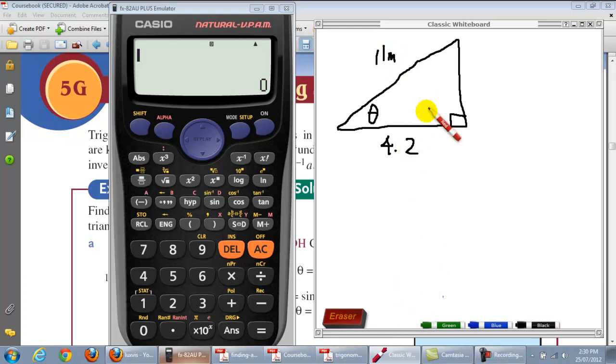So first step first. Identify the sides. That's H. That there is O and that must be A.